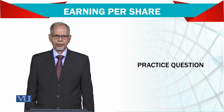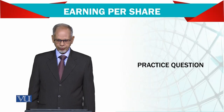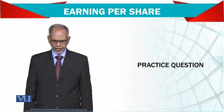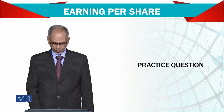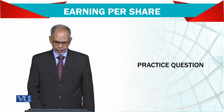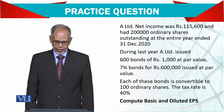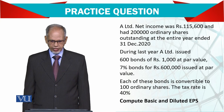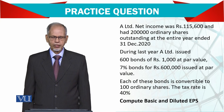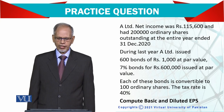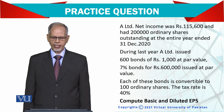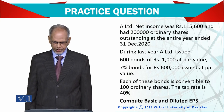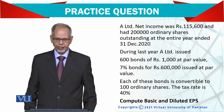Let's have another question regarding earnings per share. A Limited's net income is 115,600 and it had 200,000 ordinary shares in issue outstanding for the entire year.